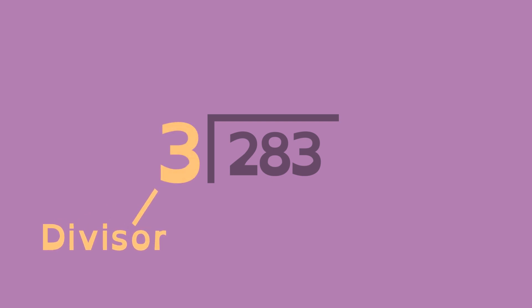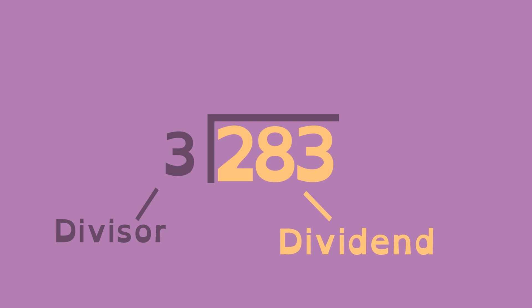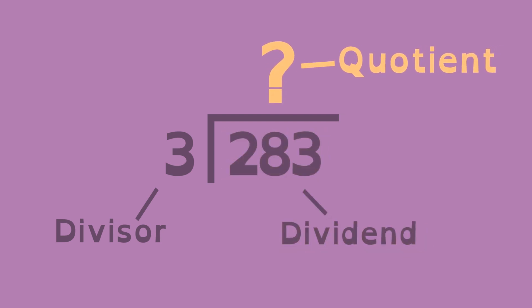The divisor, the number you divide by, goes here. The dividend, the number you're dividing, goes here. The answer, or quotient, will go here.